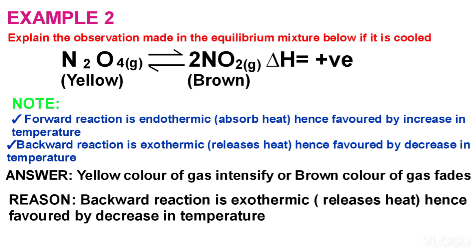If the question asked for the observation made if the mixture is heated — that means increasing temperature — the answer will be: the yellow colour of gas fades, or the brown colour of gas intensifies. The reason is the forward reaction is endothermic, hence favoured by an increase in temperature. Or we can say equilibrium shifts from left to right because an increase in temperature favors the direction that absorbs heat.